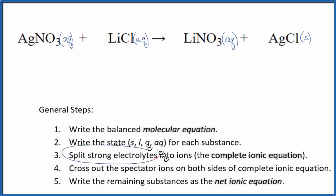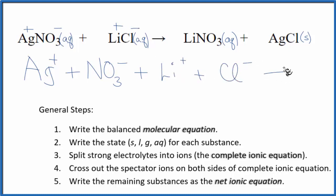Now we can split the strong electrolytes into their ions for the complete ionic equation. Silver is a transition metal but it's an exception—it always has a 1+ charge. The nitrate ion has a 1- charge. So we have Ag+ plus NO3-. Lithium in group 1 has a positive charge, chlorine is negative. So we have Li+ plus Cl-. Those are the reactants.